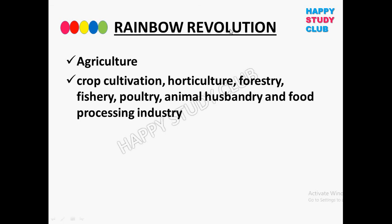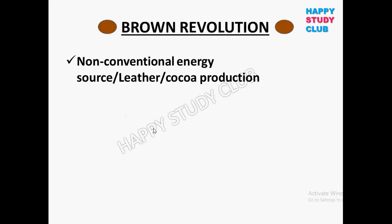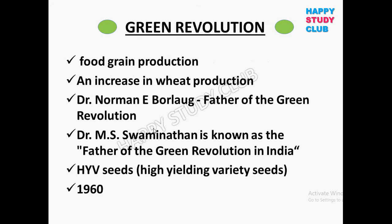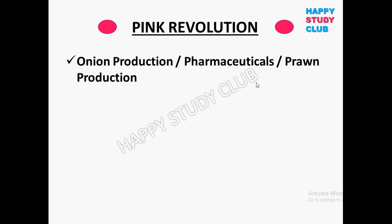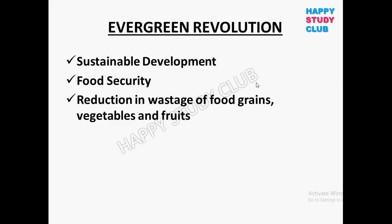The Second Green Revolution is related to rice, proteins, and pulses. During the first Green Revolution, only wheat production was increased. For other food grain production such as rice and pulses, the Second Green Revolution was launched. The Evergreen Revolution is related to sustainable development, food security, and reduction in wastage of food grains, vegetables, and fruits.